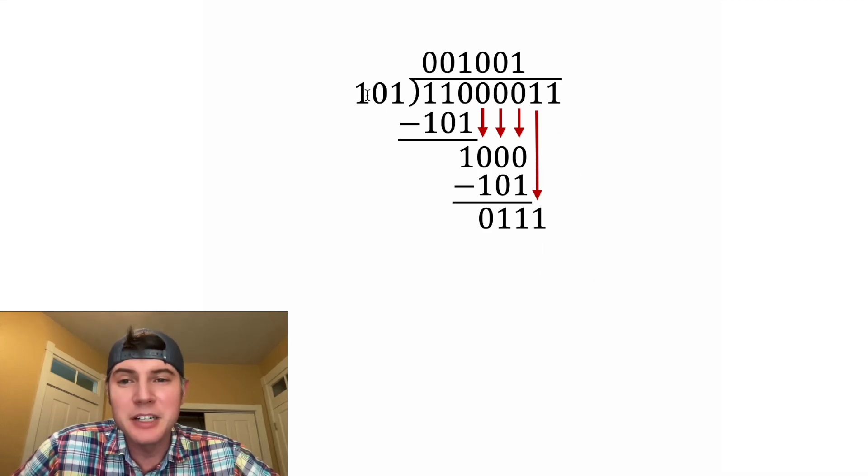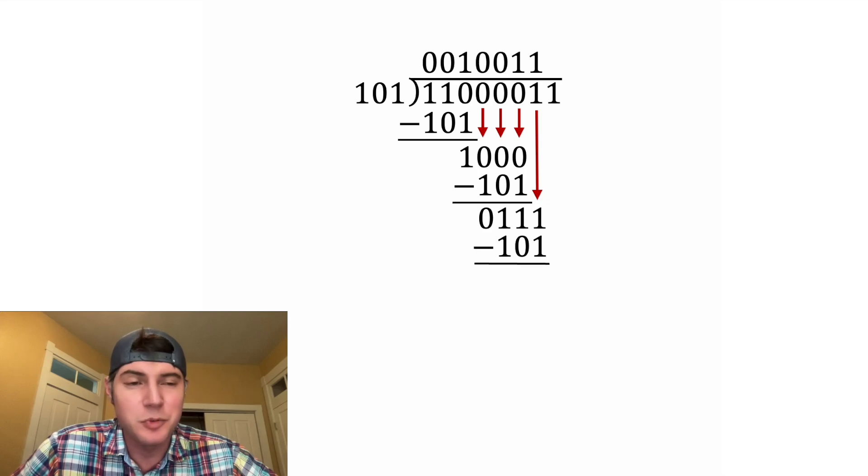Now let's bring down another 1. How many times does 101 go into 111? It'll go in 1 time. So then we multiply 1 times 101 gives us 101. And then we're going to subtract it. 1 minus 1 is 0. 1 minus 0 is 1. 1 minus 1 is 0.